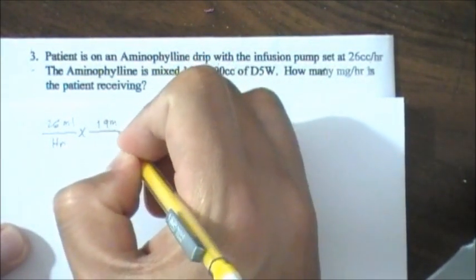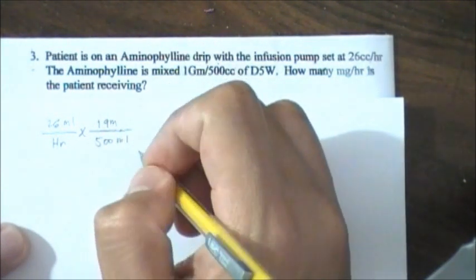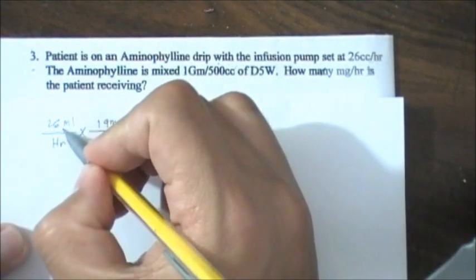So you want to put 1 gram here and 500ml. And why do you want to put 500ml as your numerator? So that you could cancel ml on this, on your 26.